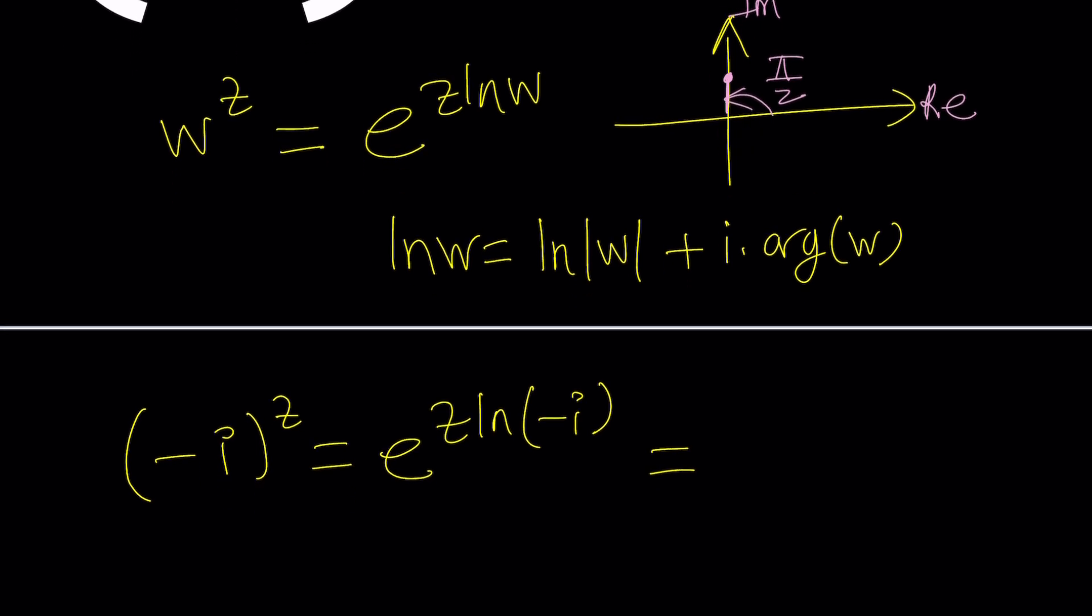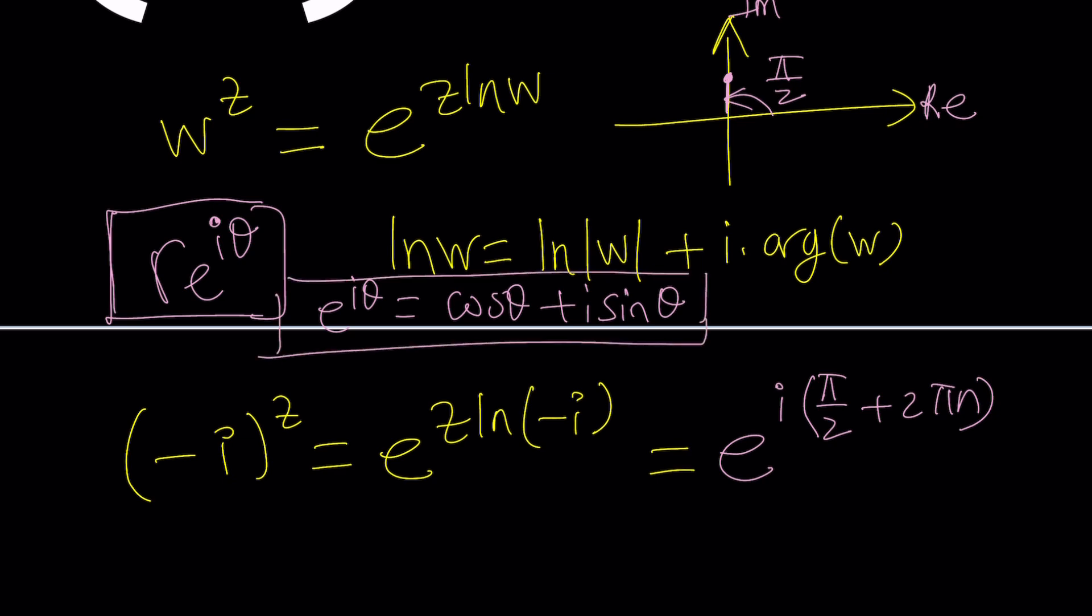So we can basically replace i with e to the power i times pi over 2 plus 2 pi n using Euler's formula. And remember what Euler said, if you have a complex number whose argument is known, and of course the modulus, then you can write it as r e to the i theta, where r is the modulus and theta is the argument. And this is called the polar form. And there's obviously a way to expand it, like e to the i theta can also be written as cosine theta plus i sine theta. Thanks to Euler, we have a beautiful relationship.